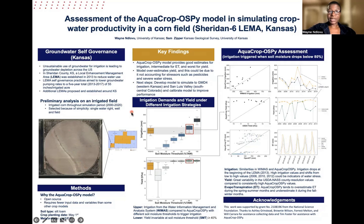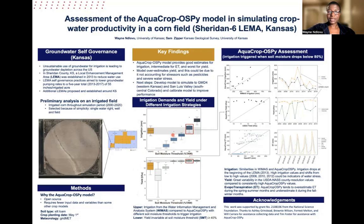We simulated the irrigation demands and yield under different irrigation strategies. The top panel shows the irrigation and the lower panel shows the yield. On the x-axis we have the soil moisture threshold as a percentage — at zero percent we are assuming the field is rain-fed, and at 40 percent, for example, irrigation is triggered when soil moisture drops below 40 percent.